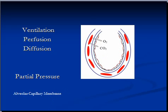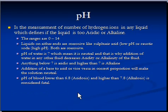pH is the measurement of the number of hydrogen ions in any liquid, which defines whether the liquid is acidic or alkaline. The range is 0 to 14. Liquids at either extreme are corrosive — like sulfuric acid at very low pH or caustic soda at very high pH. The pH of water is 7, which is neutral. Anything below 7 is acidic and above 7 is alkaline. A blood pH lower than 6.8 or higher than 7.8 is considered fatal.